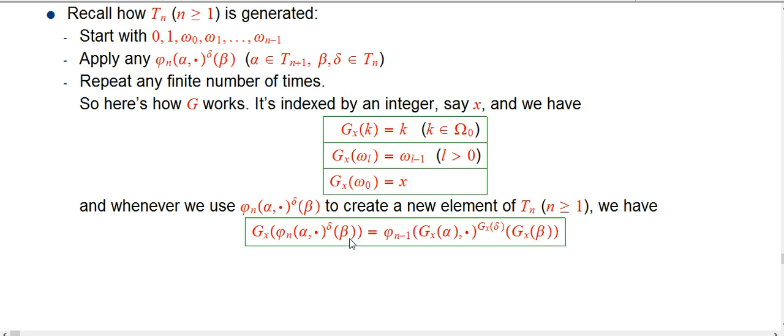And you reduce it to the n minus 1 function. So it's the n minus 1 function with control argument G x of alpha, iterated G x of delta times applied to G x of beta.